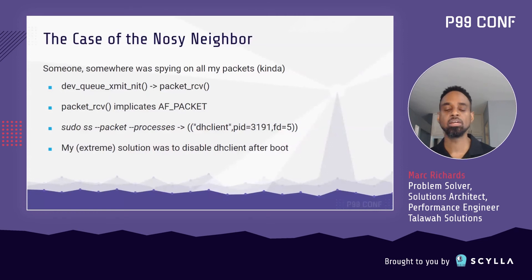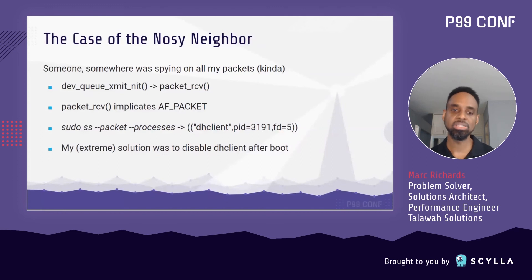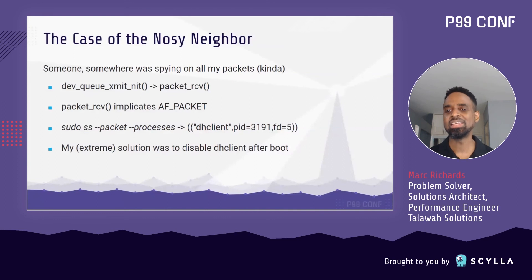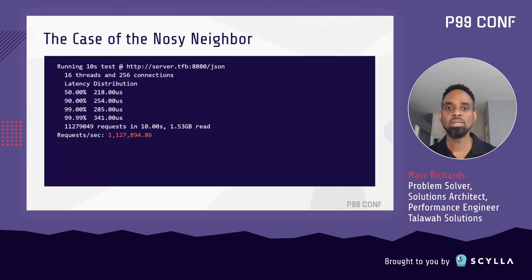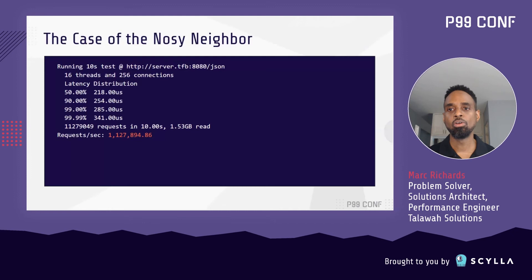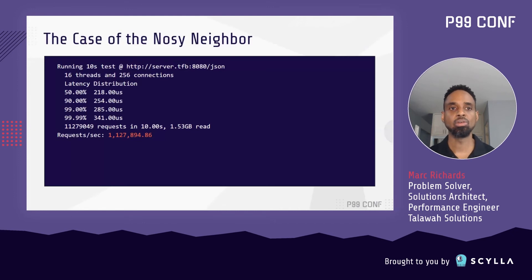Now according to the AWS docs, once an instance is assigned a private IP, it's associated with that instance for life, even across reboots and extended stops. So since I didn't really need DHCP for that, I just disabled it after booting up. Disabling DHCP gives us a performance boost of just under 6%, and throughput moves from 1.06 million requests per second to 1.12 million requests per second.